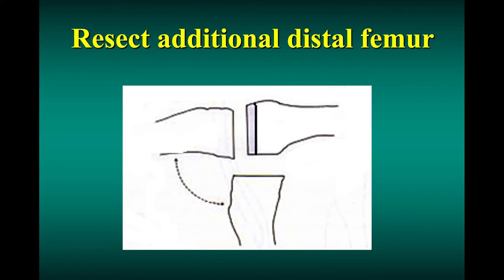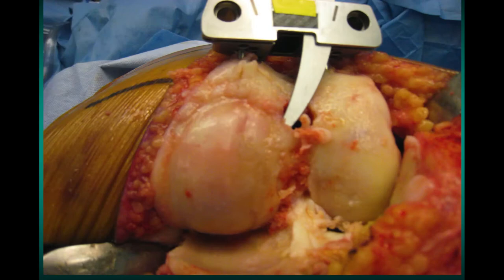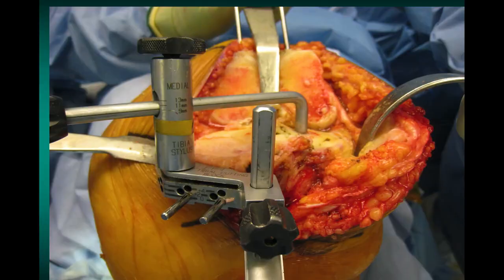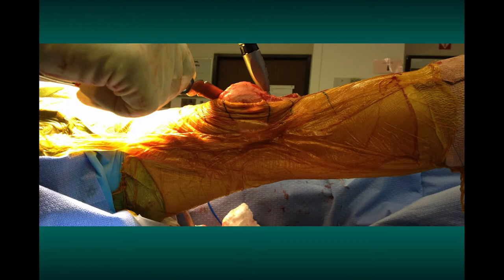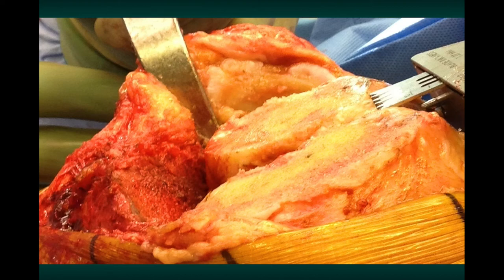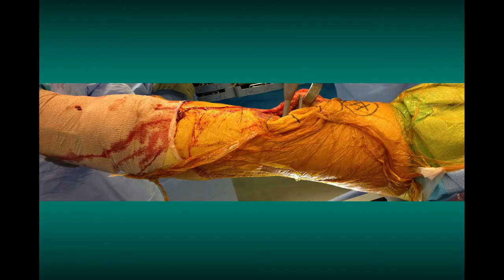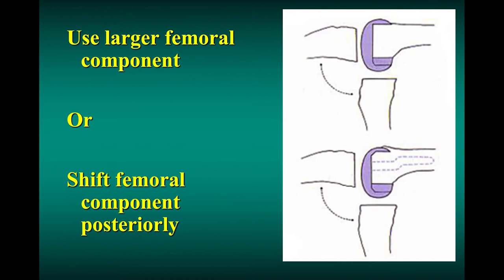The conventional wisdom when we have a gap that's bigger in flexion than extension is to remove a little more bone from the distal femur, and that gives you equal gaps. This is kind of what happens when you have a flexion contracture: we start with a measured resection on the femur, make our distal cut, go to the tibia, measure the resection with the stylus, make the tibial cut, put in the spacer block, look at the knee from the side — it doesn't extend all the way — so we go back and remove a little bit more femur and it extends all the way. With revision components that are offset, we can also add an augment and use an offset stem that moves it posteriorly, as alternative ways to fill up the flexion space.